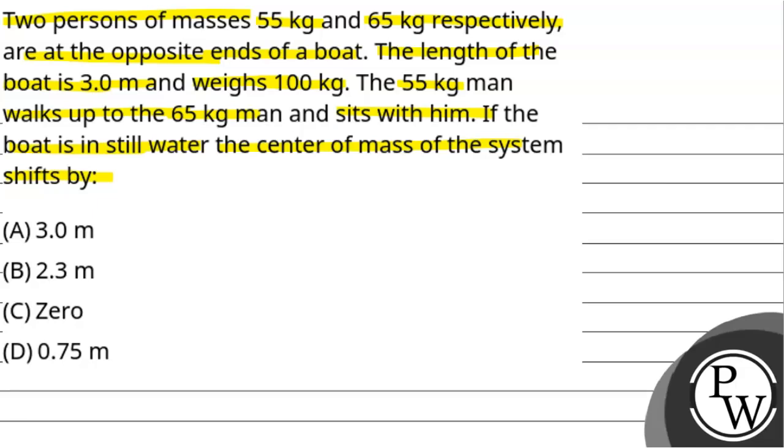So according to the question, we have a boat like this. At both ends of the boat, one person has a mass of 55 kg and the second one has 65 kg of mass. The length of the boat is given as 3 meters and it weighs 100 kg.